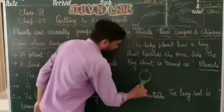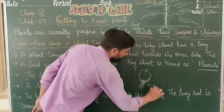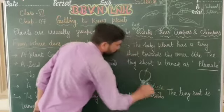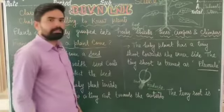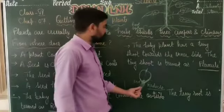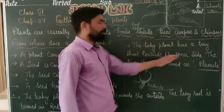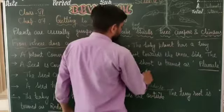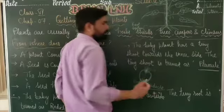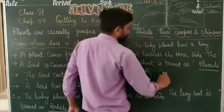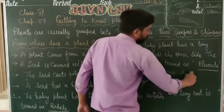The tiny root structure in the seed is termed as radicle। यहाँ से जो roots निकलती हैं उसे radicle कहते हैं — यह root ही है। फिर इसी seed की बात करते हैं — the baby plant also has a tiny shoot towards the inside, उस shoot को plumule कहते हैं।